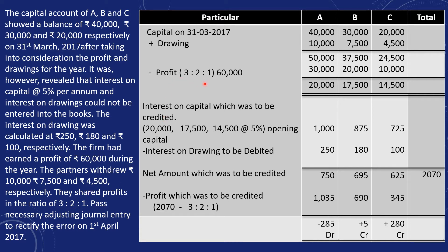The profit has been distributed in ratio 3:2:1. Now we calculate interest on opening capital at 5% per annum. A: Rs. 20,000 × 5% = Rs. 1,000. B: Rs. 17,500 × 5% = Rs. 875. C: Rs. 14,500 × 5% = Rs. 725.